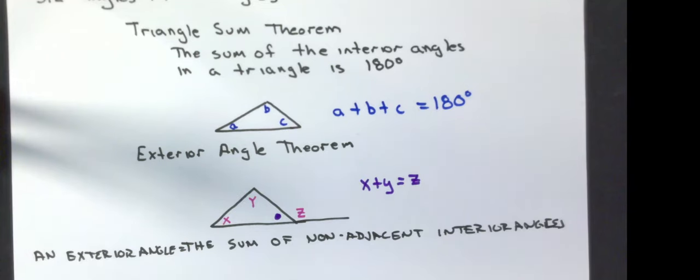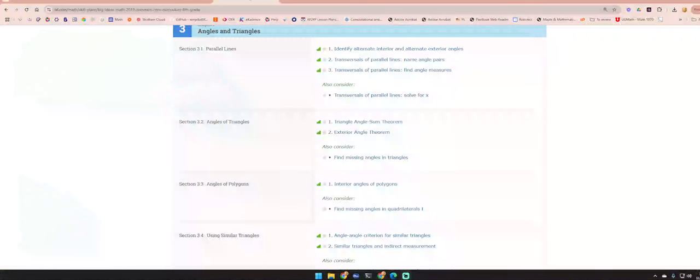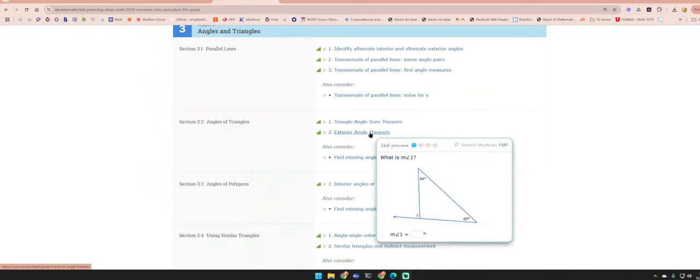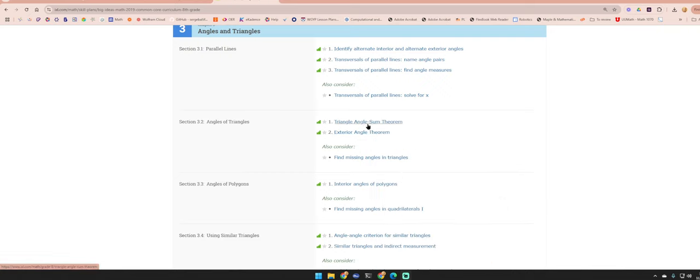And we are in section 3.2. So let's hope that I can pull up IXL. Yes, IXL does pull up. We're going to do both of these in 3.2: triangle sum theorem and exterior angle theorem. Let me move my keyboard over so I can actually type stuff in here. So I'm going to click on triangle sum theorem.